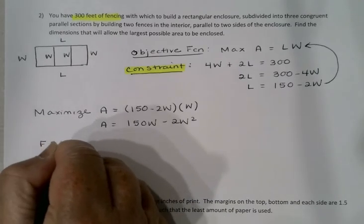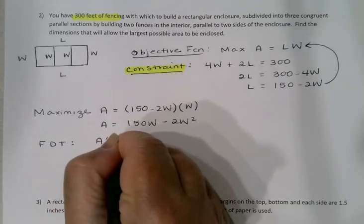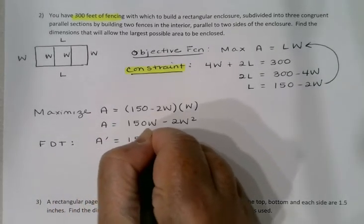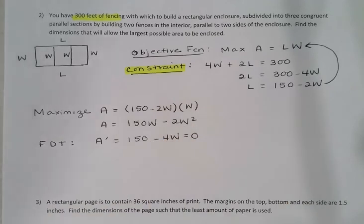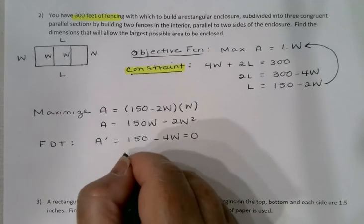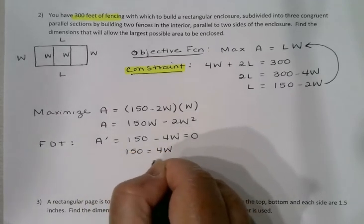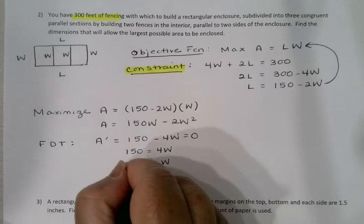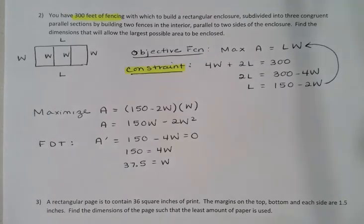To find the maximum, I'll do my first derivative test. A' = 150 - 4W, and I want to know where that's equal to 0. So 150 divided by 4, 37.5 is W this time.